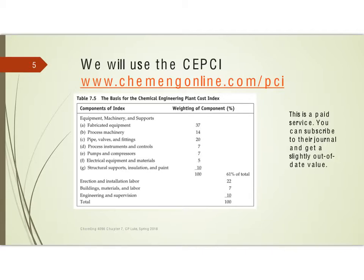What the Chemical Engineering Online magazine does is they look at these items. The equipment they're considering is fabricated equipment — this would be things such as a distillation column. Process machinery, so maybe filters or something. Pipes, valves, and fittings. Instruments and control systems. Pumps and compressors. Electrical equipment and materials associated with that.